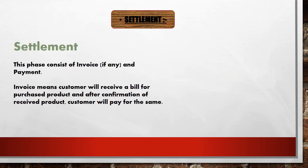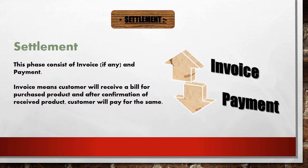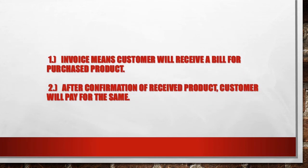After execution comes the settlement phase. Settlement consists of invoice and payment. Once you have received the product, you have to make payment for it. A bill will be generated and you pay it. Invoice means the customer receives a bill for the purchased product, and after confirmation of the received product, the customer pays for it. So the supplier sends you the bill and you pay the supplier in return.